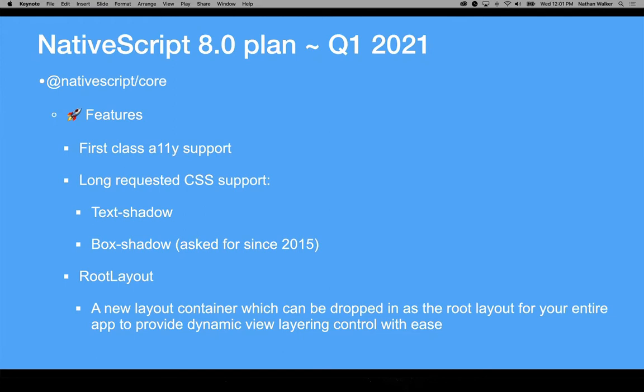In NativeScript core there are some big features, some long desired for quite some time. First of all, first-class accessibility support. There's been a plugin for that for quite some time that works pretty well, but it's needed some better native handling, so we're excited to finally bring that in. Also some long-requested CSS support — box shadow goes back to 2015 and is finally going to be supported in CSS, along with text shadow, both being done by great contributors in concert with the TSC.